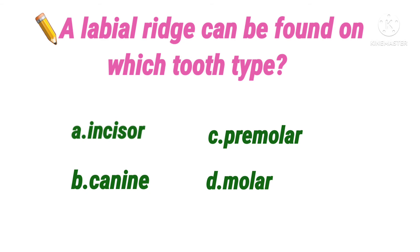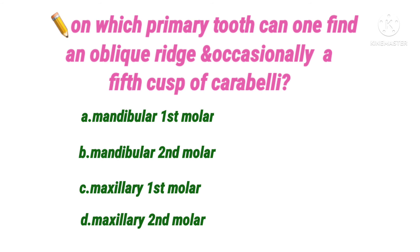Next question: a labial ridge can be found on which tooth type? Option A incisors, B canines, C molars, D premolars. Canines are the only teeth with a distinct vertical labial ridge, with shallow developmental depressions mesial and distal to the labial ridge, which runs incisocervically near the center of the crown in the middle and incisal thirds. The labial ridge is quite prominent on the maxillary canine. Premolars have a similar-looking ridge on the labial surface, but it is called a buccal ridge, not a labial ridge. No molar has a labial ridge. The answer is option B, canine.